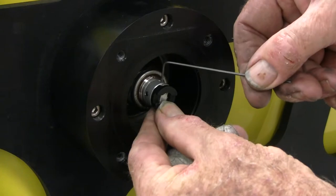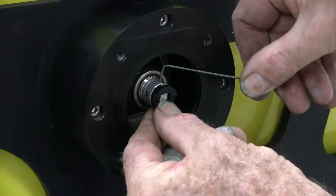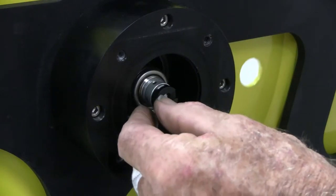Next we will remove the encoder coupling. Use the small allen wrench to loosen the two set screws that hold the coupling on the shaft and slide off the coupling.